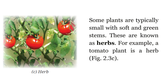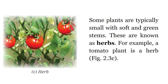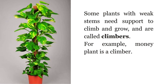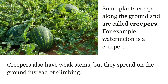Some plants with weak stems need support to climb and grow — these are called climbers. For example, money plant is a climber. And some plants creep along the ground and are called creepers. For example, watermelon is a creeper. Creepers also have weak stems but they spread on the ground instead of climbing.